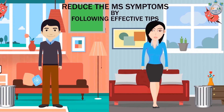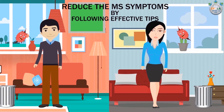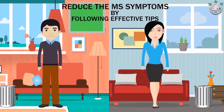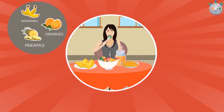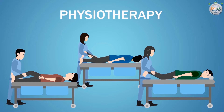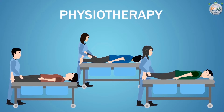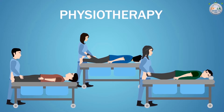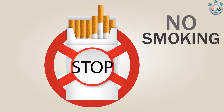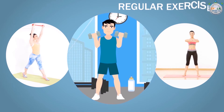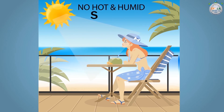reduce the symptoms by maintaining a healthy lifestyle and following these effective tips: eat a healthy and well-balanced diet, go for physiotherapy as it is very helpful for slurred speech, balancing, and fatigue problems. Avoid smoking and exercise every day.